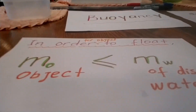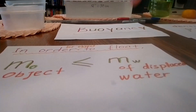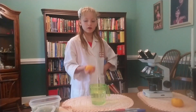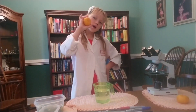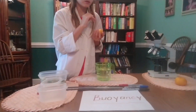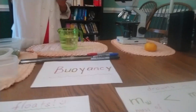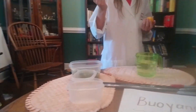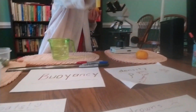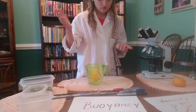Mass — in order for the object to float, the mass of the object is less than or equal to the mass of the displaced water. So I have an orange to illustrate buoyancy and density. There's an orange with peel — it floats.